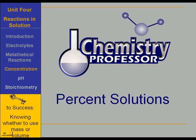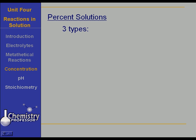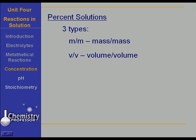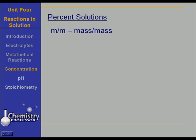The key to success with percent solutions is knowing whether you use mass or whether you use volume. When we look at percent solutions, we notice there are three types: mass-mass, sometimes called weight-weight; volume-volume; and mass-volume, sometimes called weight-volume solution. Let's start with mass-mass or weight-weight solutions.